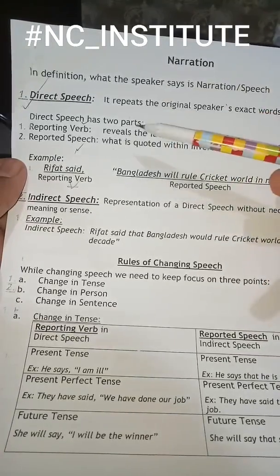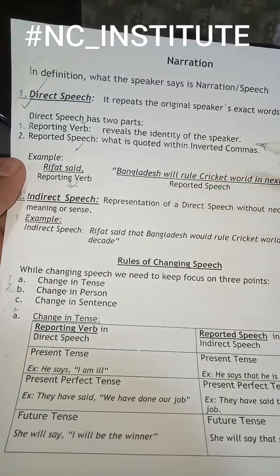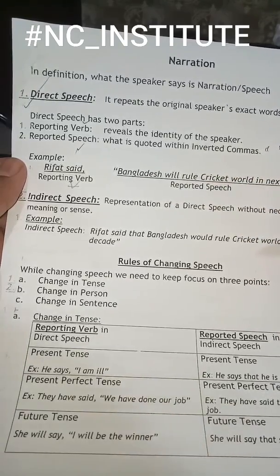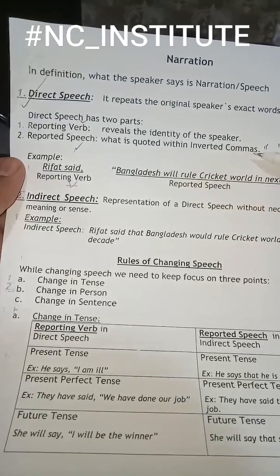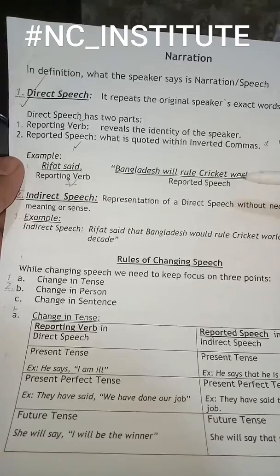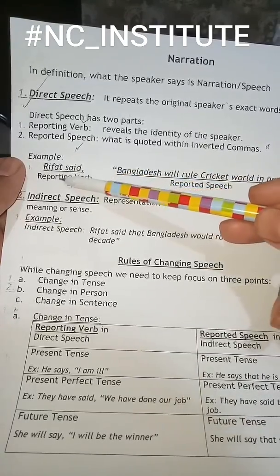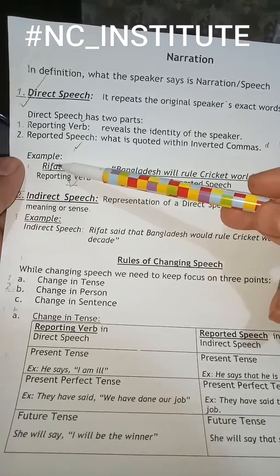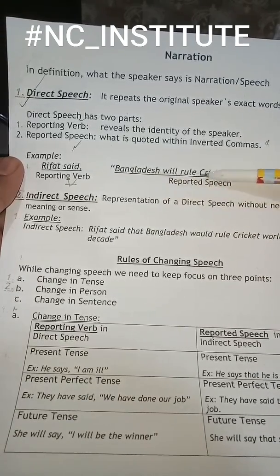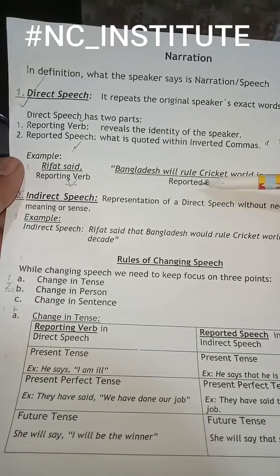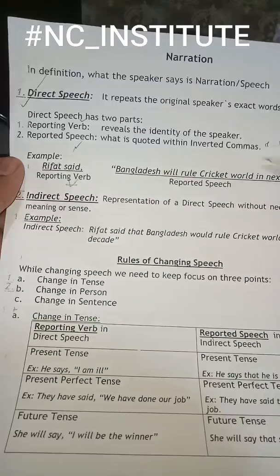Direct speech has two parts. The first is the reporting verb, which reveals the identity of the speaker — we get to know who is the speaker in the sentence. The other part is the reported speech, which is what is quoted within inverted commas. In inverted commas, we find the speech of the speaker. As you can see from the example, 'the referee said' is the reporting verb because it reveals the identity of the speaker. The referee said: 'Bangladesh will rule the cricket world in the next decade' — that is the reported speech, containing the words of the speaker in inverted commas.